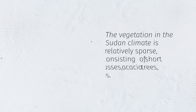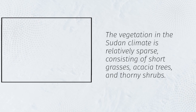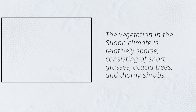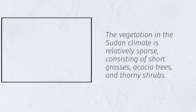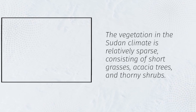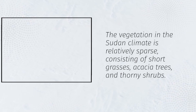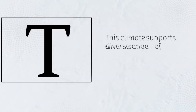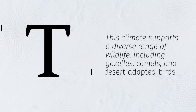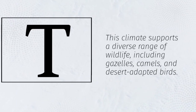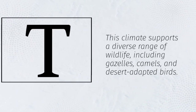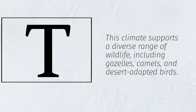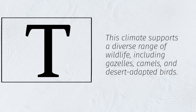The vegetation in the Sudan climate is relatively sparse, consisting of short grasses, acacia trees, and thorny shrubs. This climate supports a diverse range of wildlife, including gazelles, camels, and desert-adapted birds.